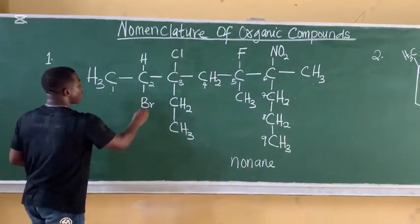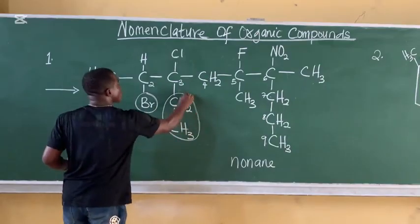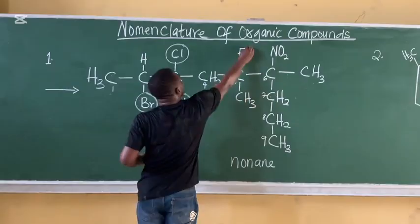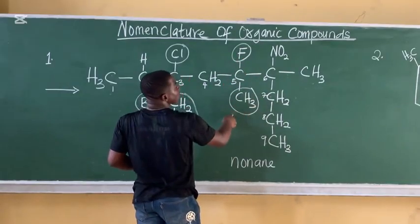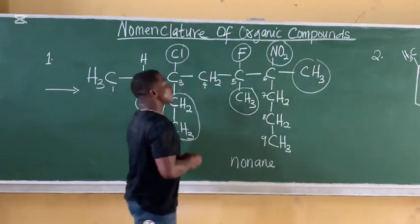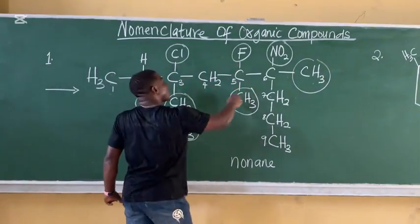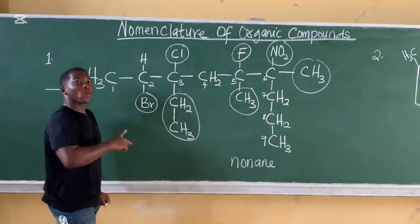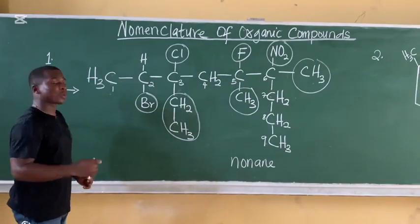Let's count how many substituents we have. We have a bromo substituent, we have an ethyl substituent, we have a chloro substituent, we have another chloro substituent, we have a methyl substituent, we have another methyl substituent, and we have a nitro substituent. So we have six substituents in total: two methyl, bromo, ethyl, fluoro, and chloro-nitro substituents. These substituents must follow alphabetical order of arrangement.